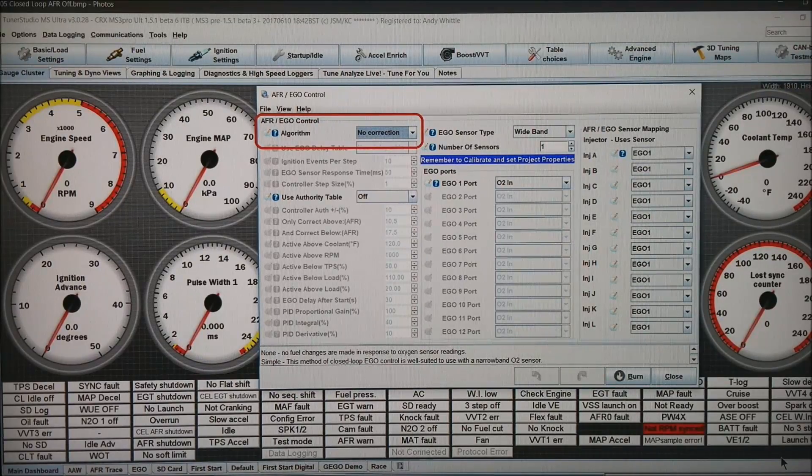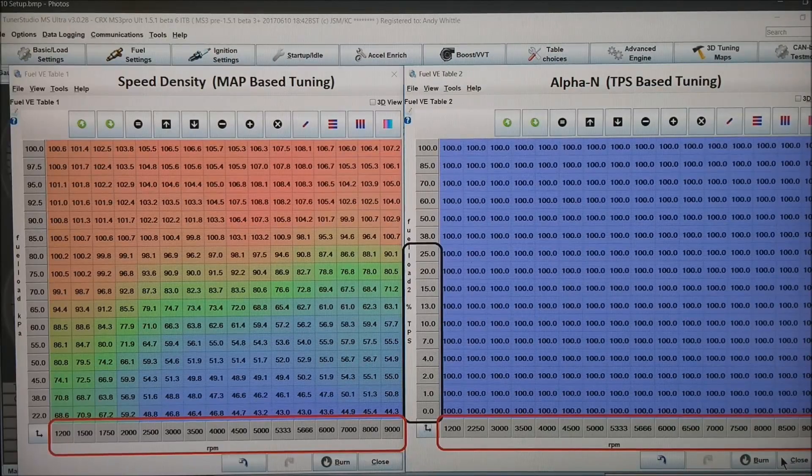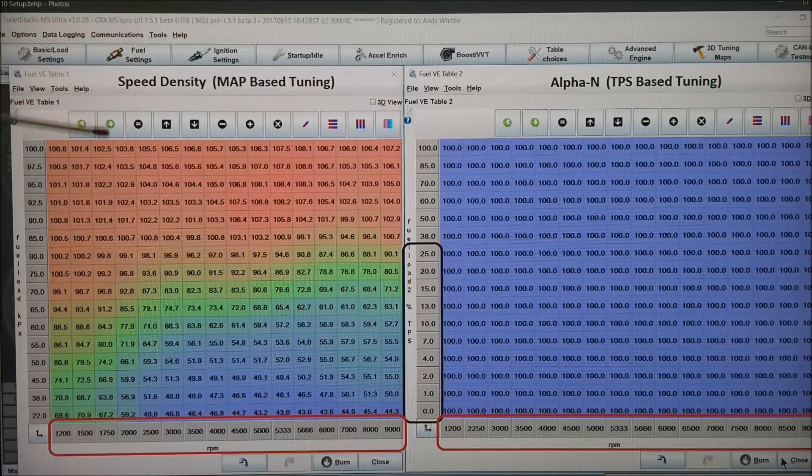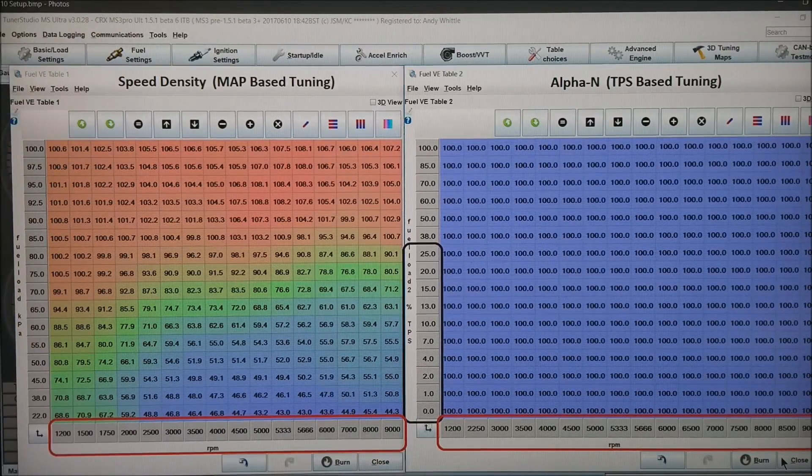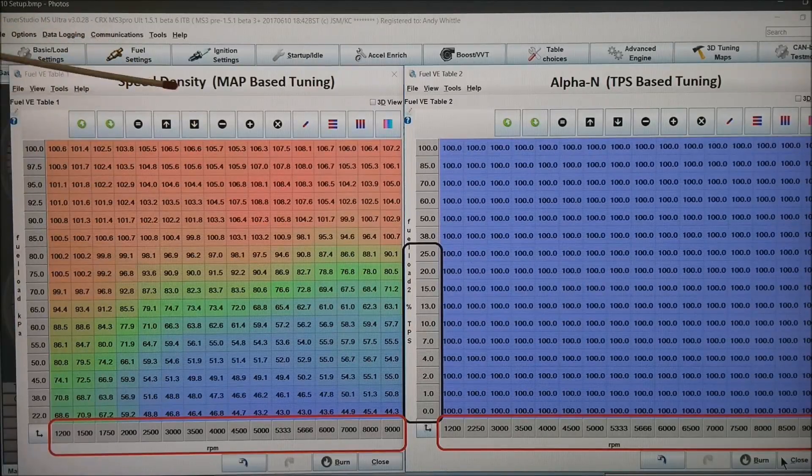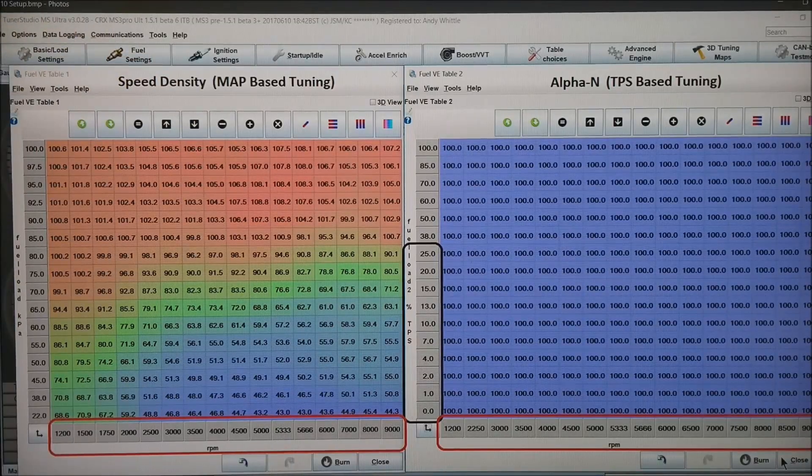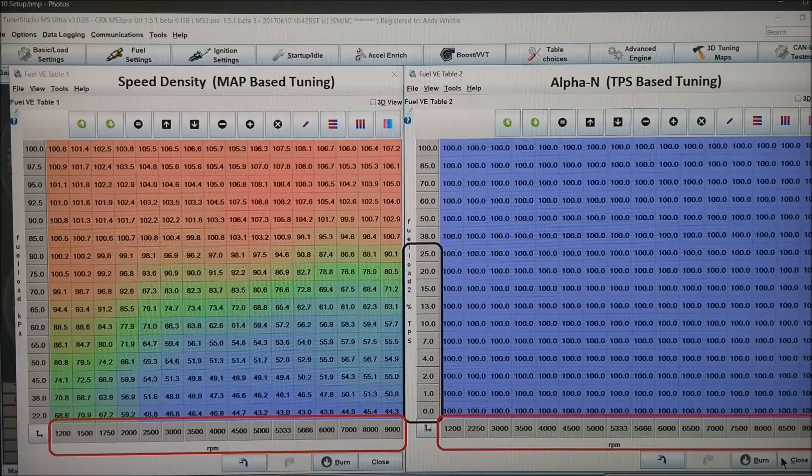We will be turning this back on later when we're done. So now if you go to fuel settings, fuel table one, your speed density will pop up. Move it over to the left side of your screen. Then also go to fuel settings and you can turn on table two.